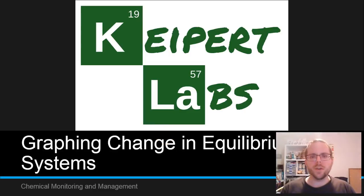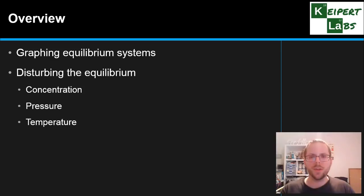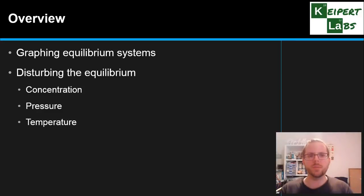Hi everyone. In this video we're going to be talking about how we can use graphs to describe and illustrate change in equilibrium systems — modelling what happens to an equilibrium when we change something like concentration, temperature, and pressure. Let's start with an overview: we'll look at how to graph equilibrium systems, what those graphs look like, and what happens when we disturb the equilibrium.